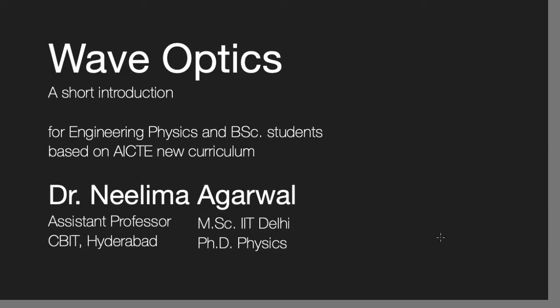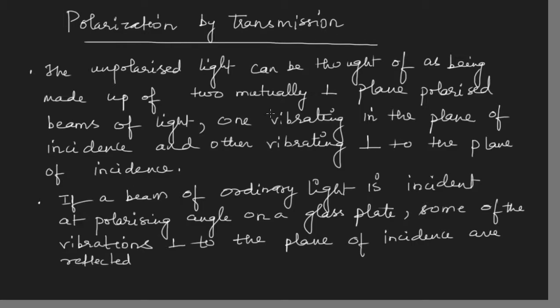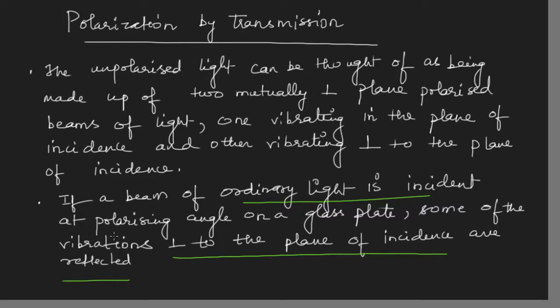We saw in the last lecture that if a beam of ordinary light is incident on a glass plate at the polarizing angle, then some of the vibrations perpendicular to the plane of incidence are reflected. This was one way of polarizing light. Now I want to polarize the light which is transmitted through the glass plate — so what can I do?